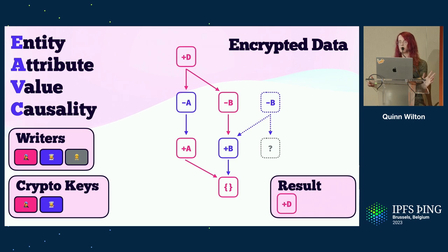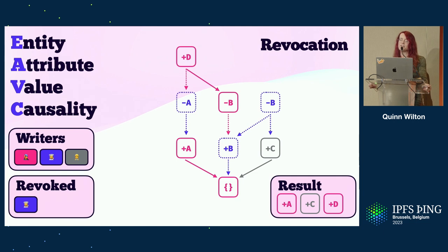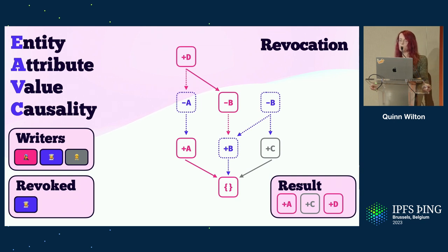What makes this design special is the way the partition can be healed and convergence restored if the required keys are ever shared with the unprivileged reader. There are other reasons a reader may prune the resulting data — in this case, they may choose to revoke all the blue events and end up with a CRDT which is still consistent with respect to all of the other events.